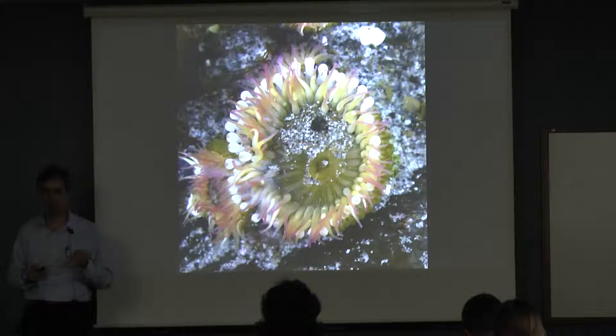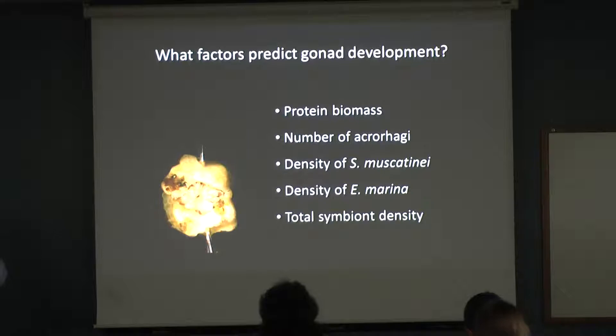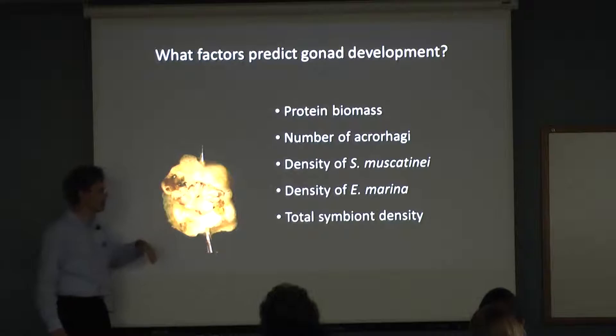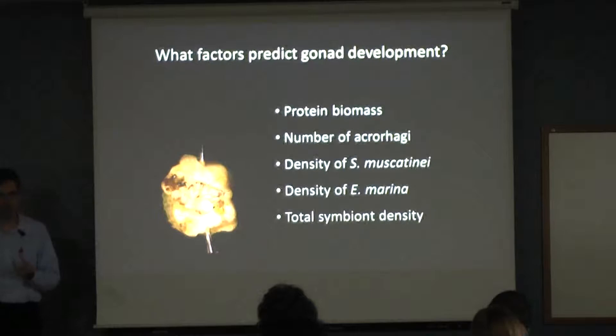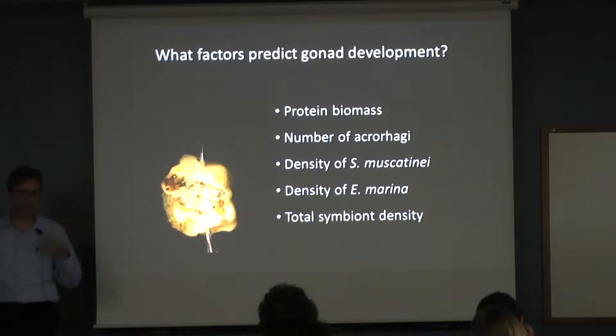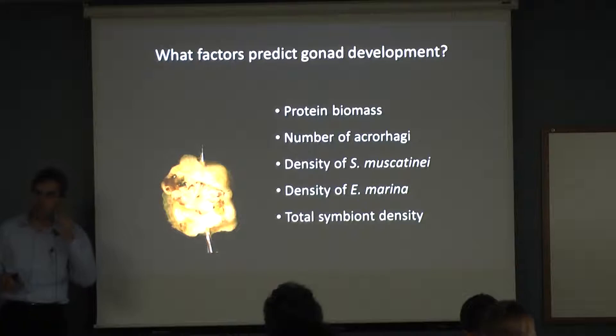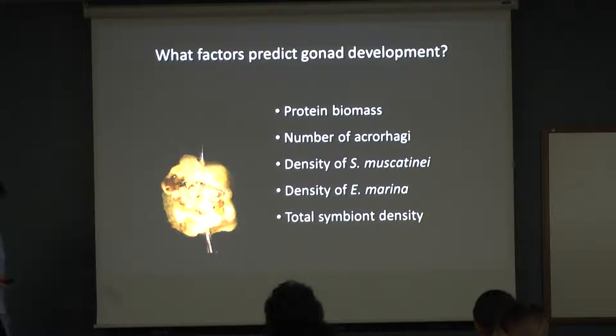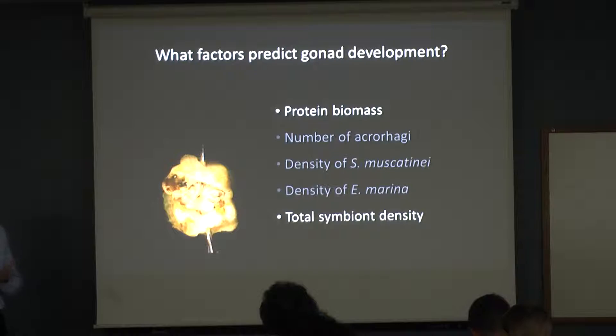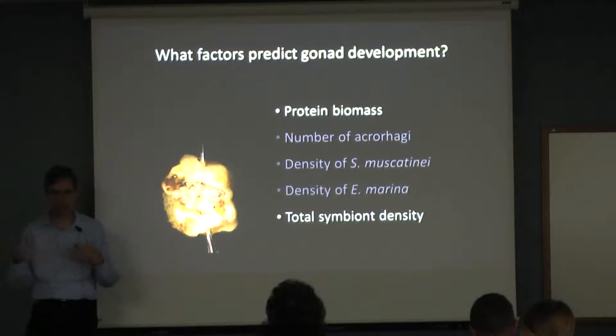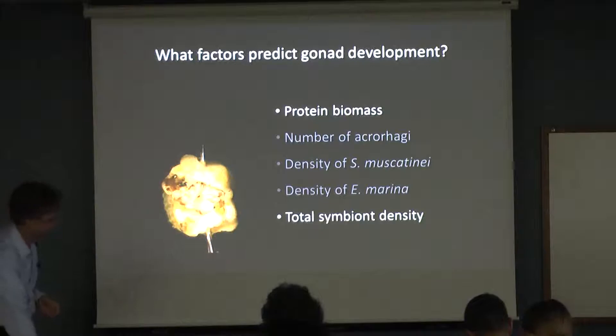So we ran an analysis including some of these other factors to determine if the gonad index could be attributed to how many symbionts they had. We did a stepwise regression looking at the biomass of the animal as an index of size, the number of those acaragi as an index of how much energy is going into fighting, and then the density of the two symbionts and total symbiont density. We handed that to the analysis and asked which of these is the best predictor of gonad index. It turns out there are two things — and it doesn't include the symbionts.